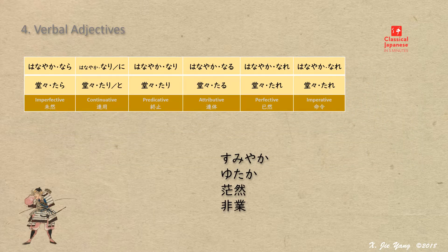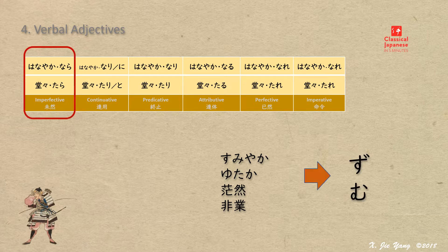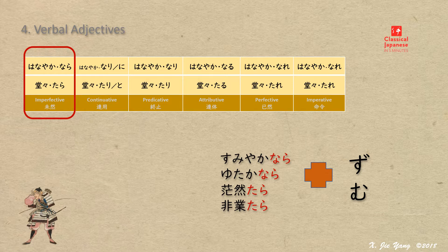Here are a few examples showing how verbal adjectives are used in different forms. Four words are randomly picked: sumiyaka (fast), yutaka (rich), bouzen (absent-mindedly), and higo (unnatural). In the negative form: sumiyaka narazu, yutaka narazu, bouzen tarazu, higo tarazu.